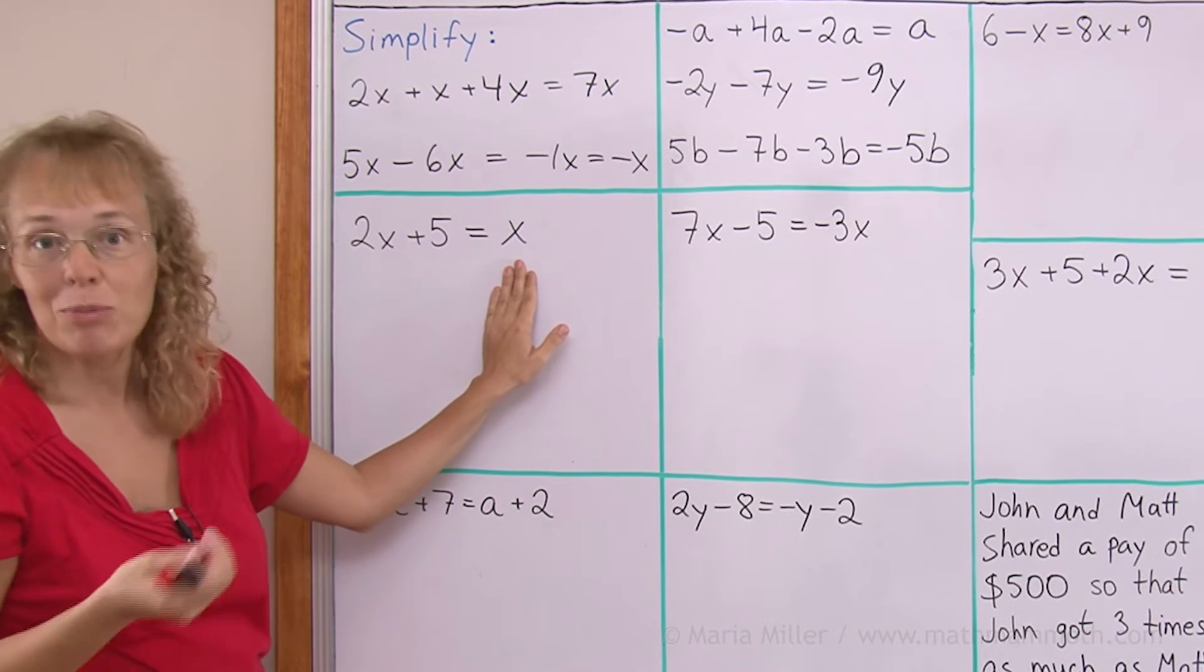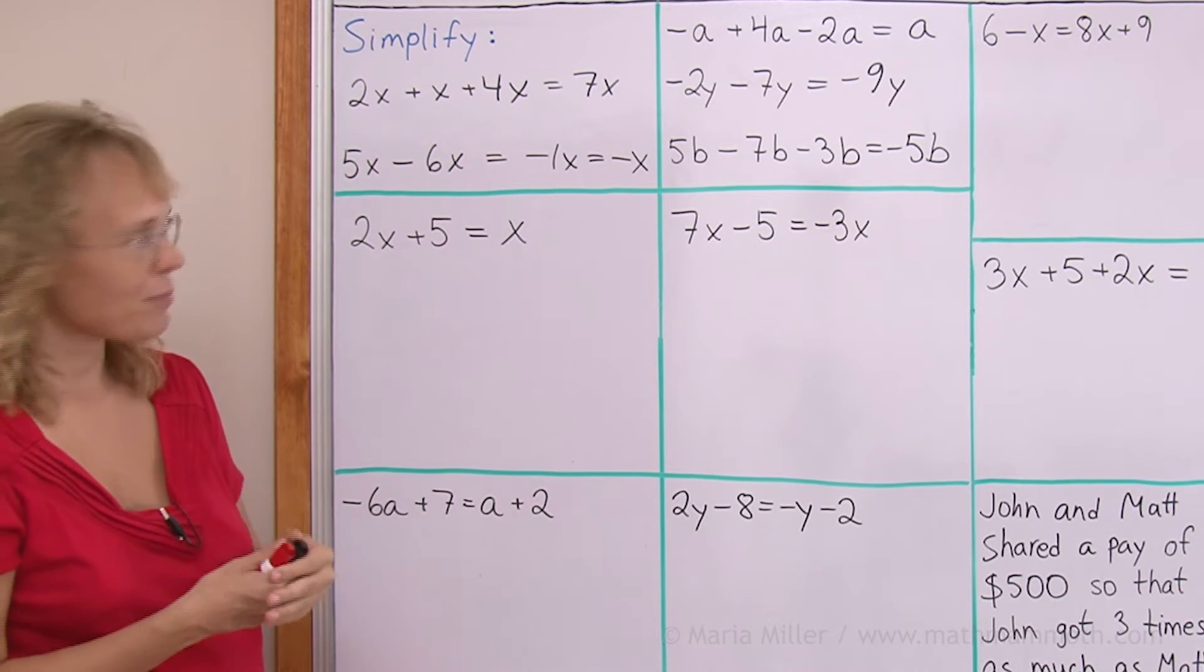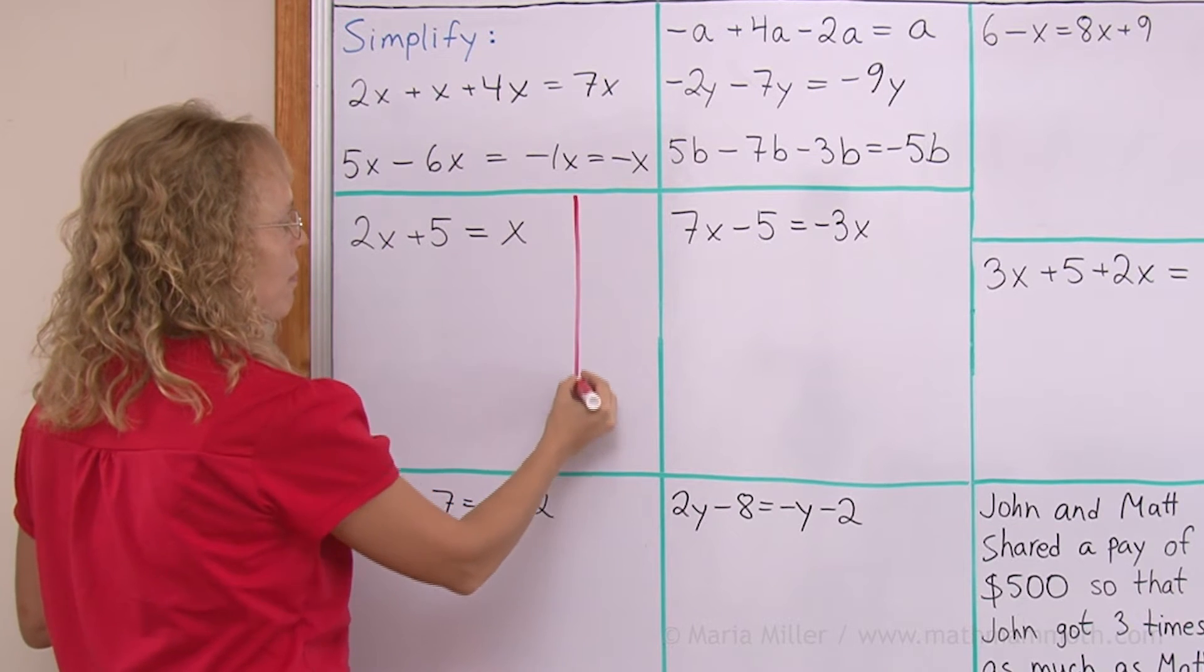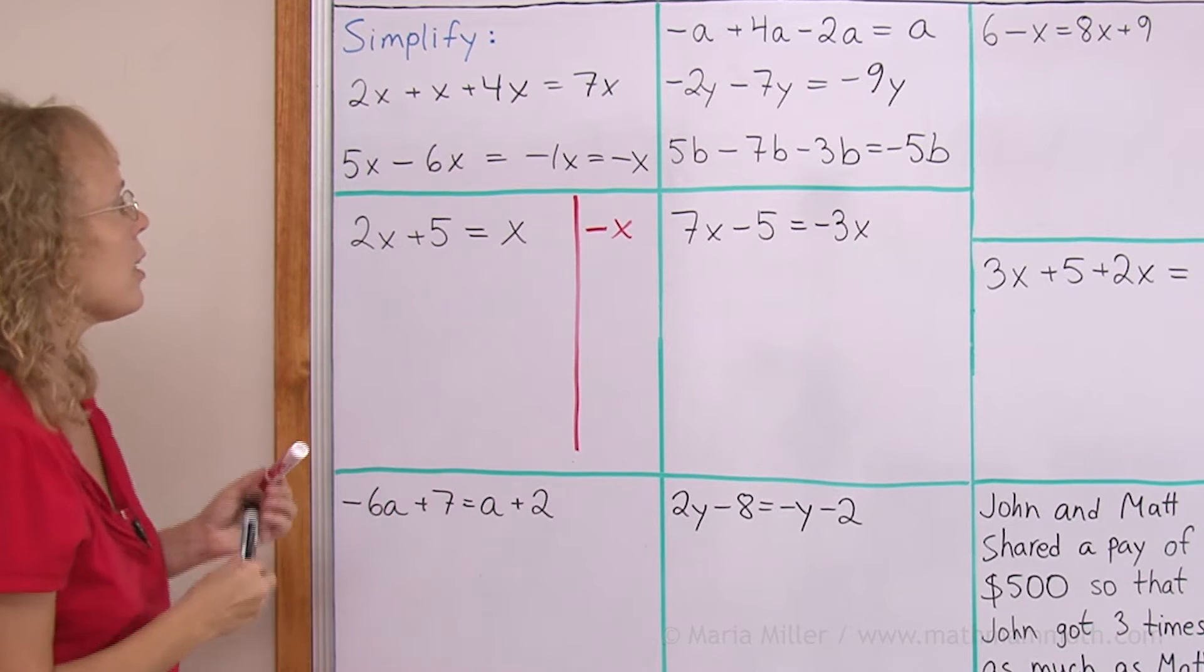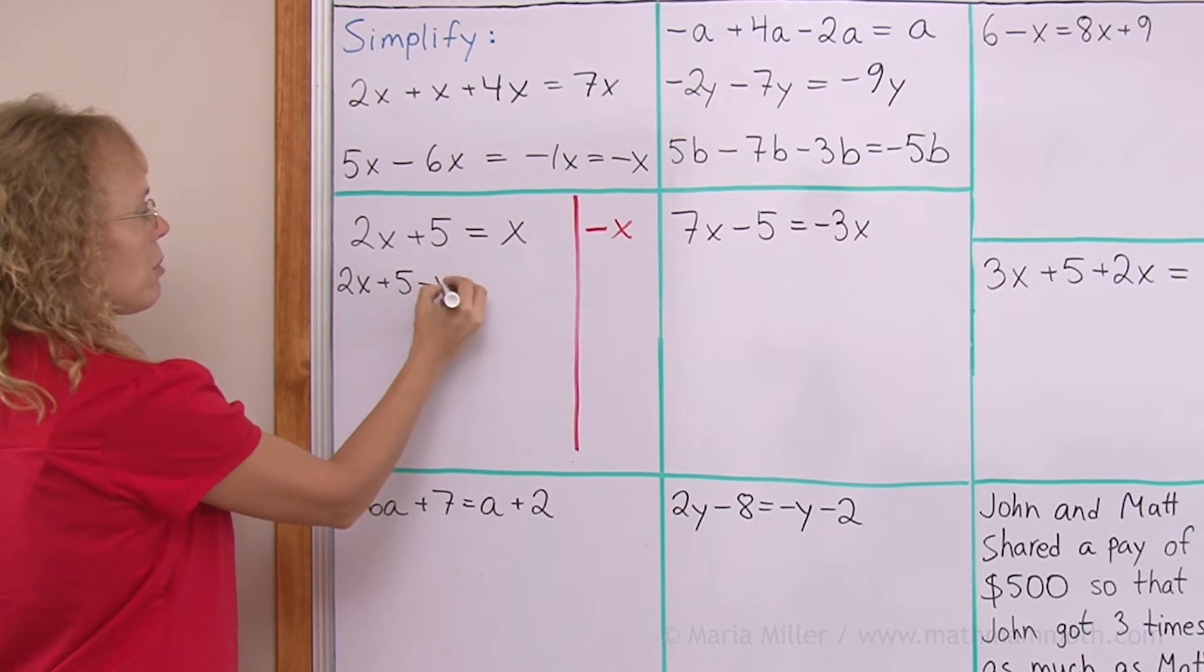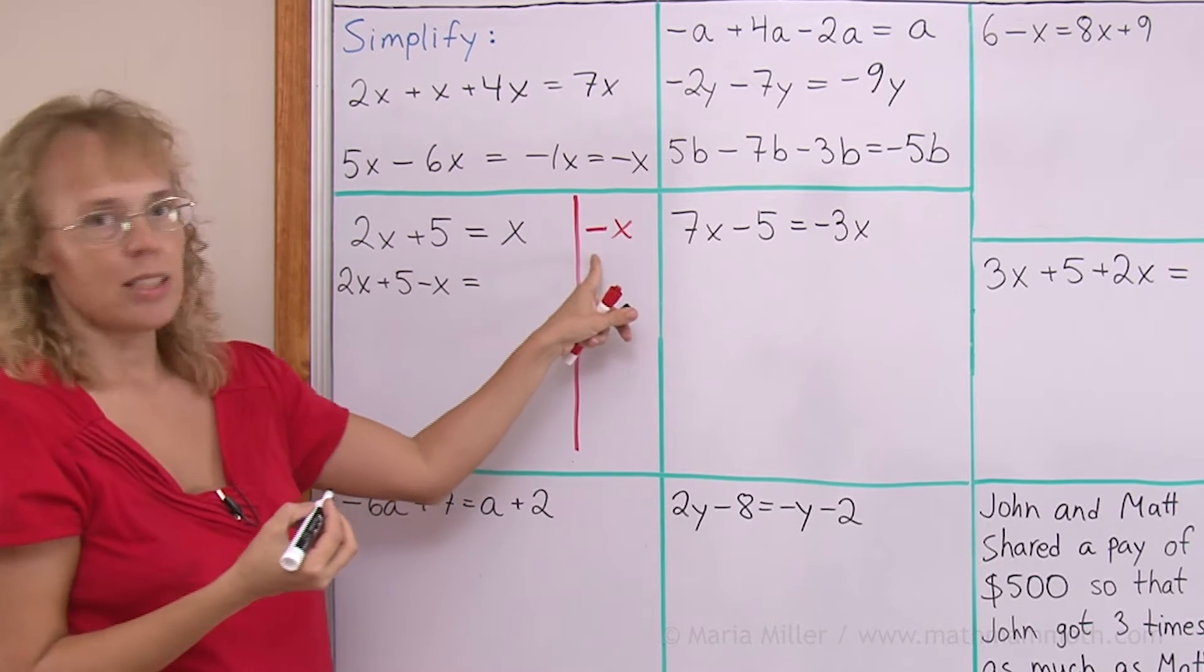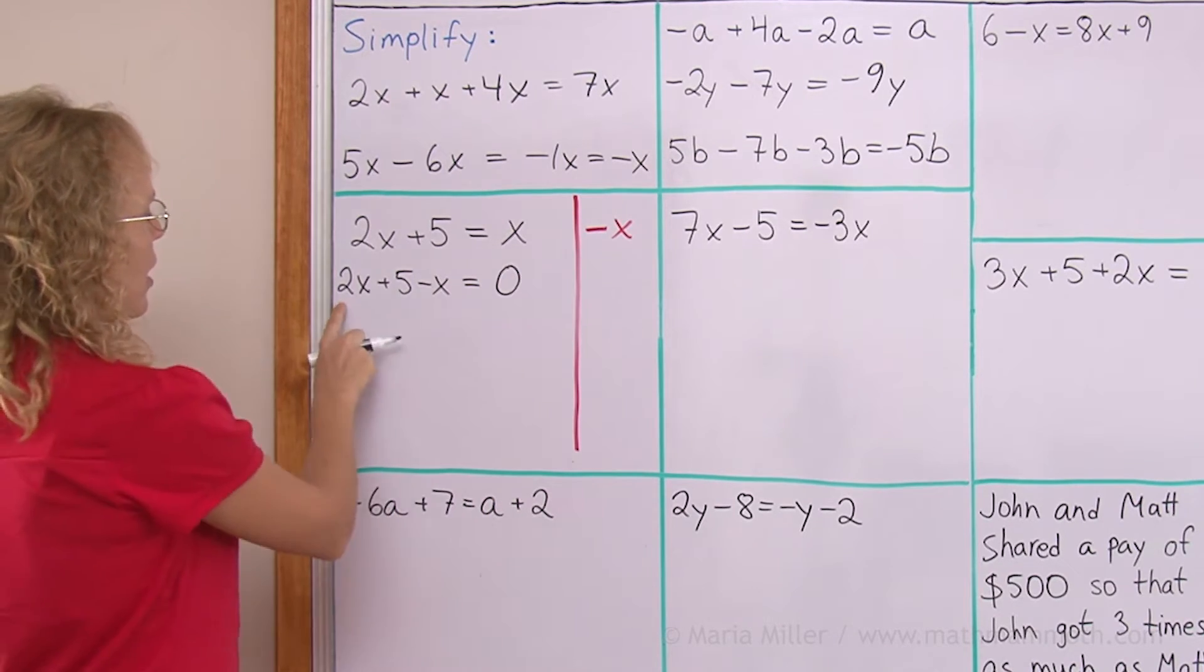So, to do that we subtract x from both sides. And so, then that gets rid of this one here. And I'm going to mark it here in my marginal note again. This is my margin. I'm going to subtract x from both sides. Now, on this side we will therefore get 2x. And then there's the plus 5. And then there's the subtract x. And on this side we get x minus x. Well, that would be 0.